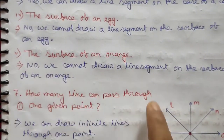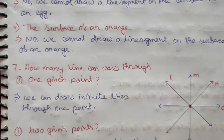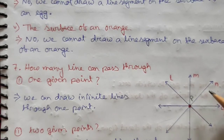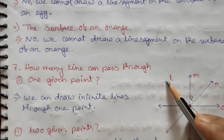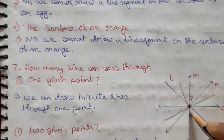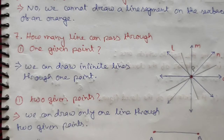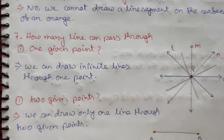The seventh question: how many lines can pass through one given point? Through one point, for example point P, we can draw an infinite number of lines. For two given points, by a property of lines, we can draw only one line through two given points.